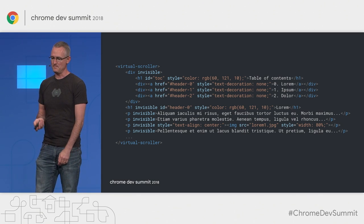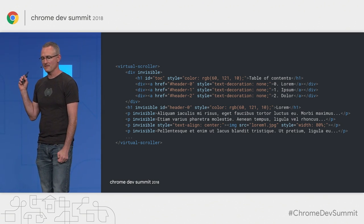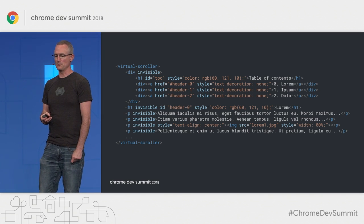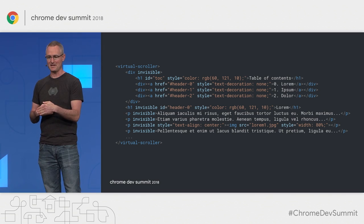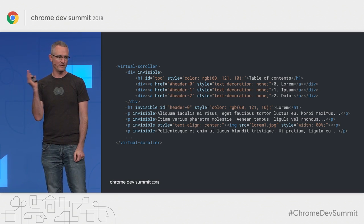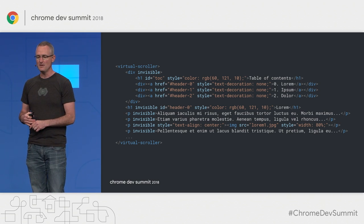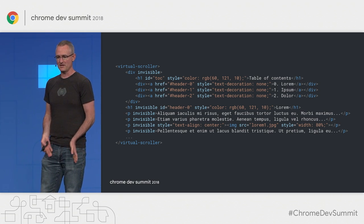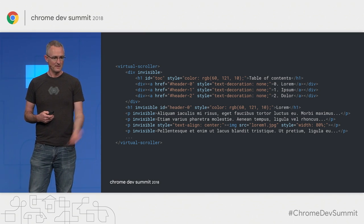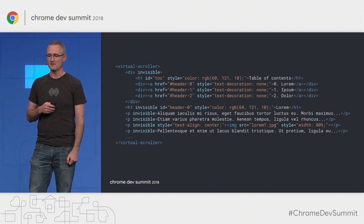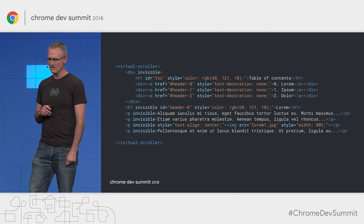One of the exciting things about using invisible-dom with a virtual scroller is that it means you can put invisible content directly in a document. We're talking with our friends in search, and the idea is that you'd be able to have your content be entirely indexable, while benefiting from the performance wins of virtual scrolling by not having to render at all on first load.